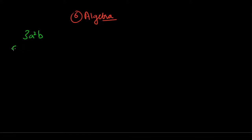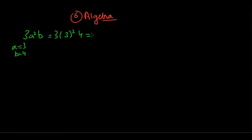If I tell you that a is equal to 3 and b is equal to 4, then you can plug in these values for a and b. So a is 3, squared is 9, b is 4, and multiplying: 9 times 3 is 27, and 27 times 4 is 108. So if you know the values of the variables, you can plug them in and find the value of the expression.